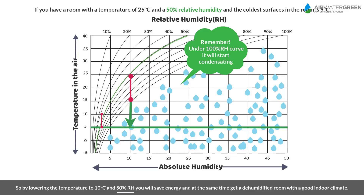By lowering the temperature to 10 degrees Celsius and maintaining 50% relative humidity, you will save energy and at the same time get a dehumidified room with a good indoor climate.